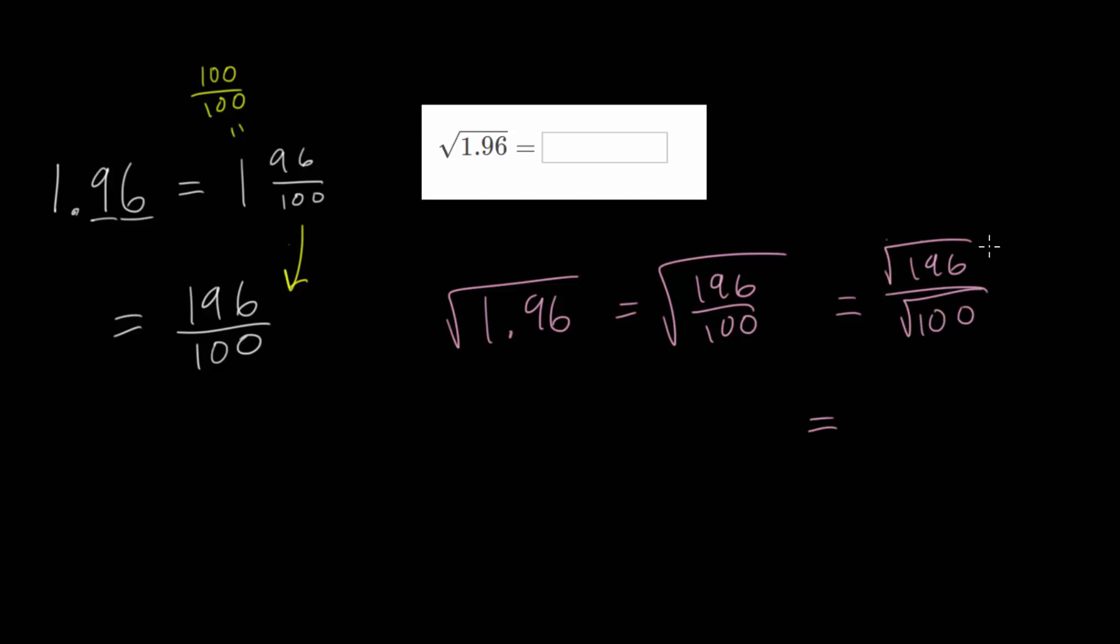So we know the square root of 196, that's just 14, since 14 times 14 is 196. And the square root of 100 is 10, since 10 times 10 is 100. So we could simplify this further, since they're each divisible by 2. So 14 divided by 2 is 7, 10 divided by 2 is 5. So 7/5 would be our final answer here.